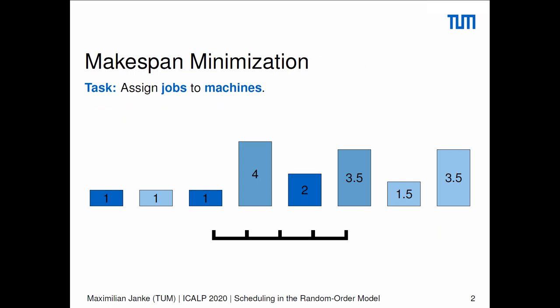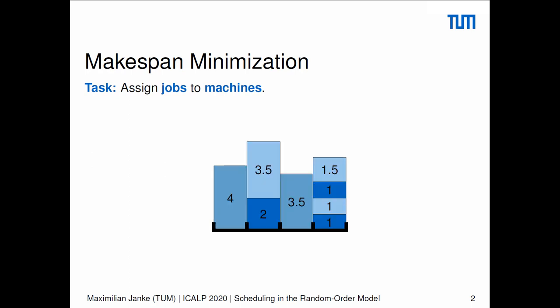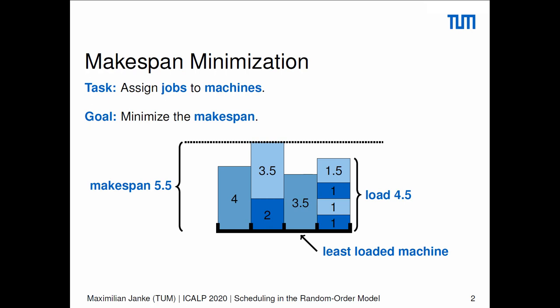In this talk we are going to study the most basic scheduling problem of makespan minimization. A set of jobs is given and has to be assigned on M identical and parallel machines. Each job runs on precisely one machine; in particular, preemption is not allowed. In the following we see such an assignment of jobs, or the schedule. The load of a machine is the time this particular machine takes to process all the jobs it is assigned to — just the sum of processing times of all the jobs which run on this machine.